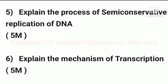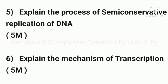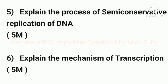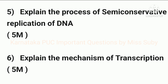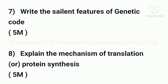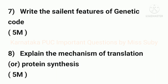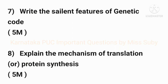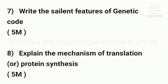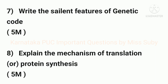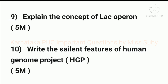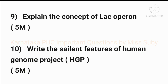The fifth question is: explain the process of semi-conservative replication of DNA. The sixth question is: explain the mechanism of transcription — it also carries five marks. The seventh question is: write the salient features of the genetic code.